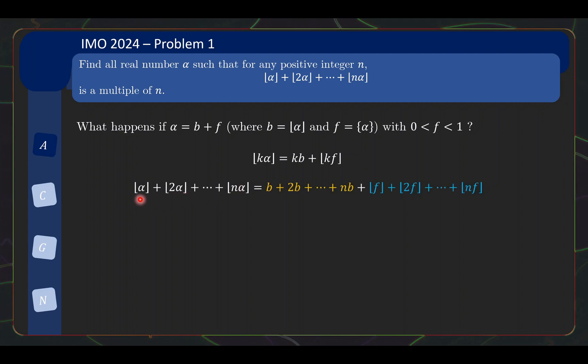So indeed, with this expression in mind, we can now rewrite the sum over here as the sum of two parts. The floor of alpha is b plus floor of f, floor of 2 alpha is 2b plus floor of 2f, and so on. This yellow part is familiar from the integer case and indeed that will be very helpful for us.